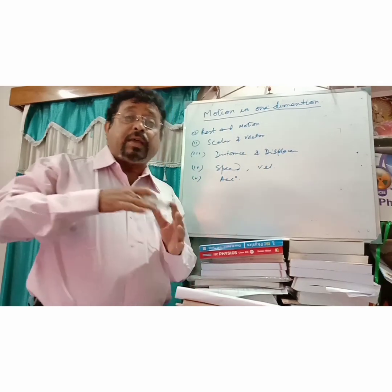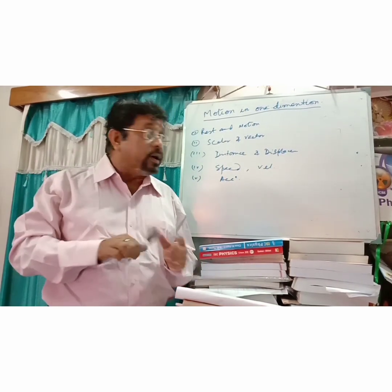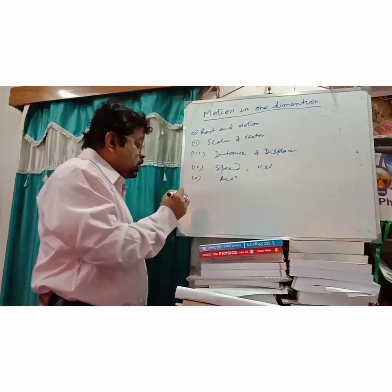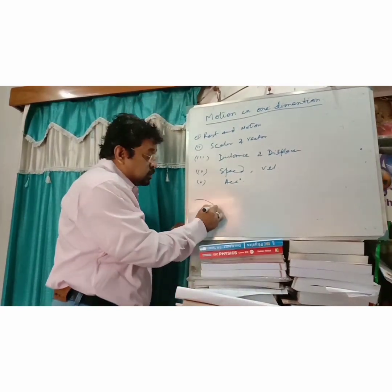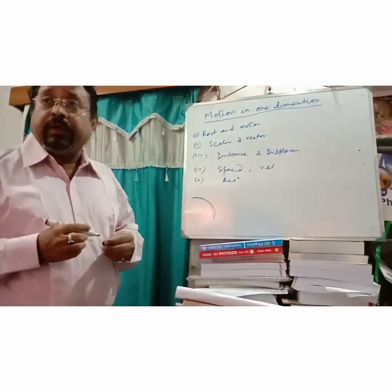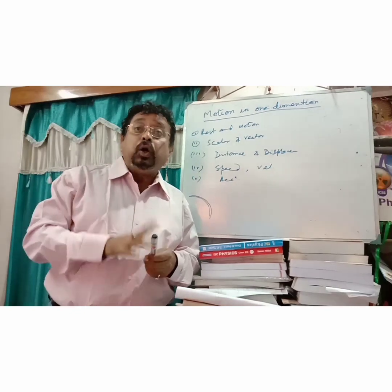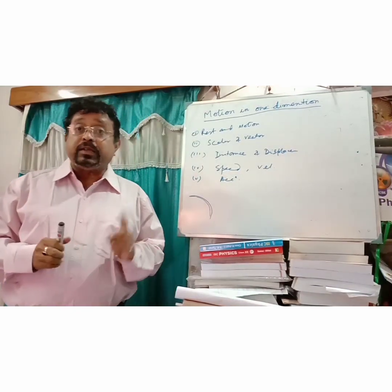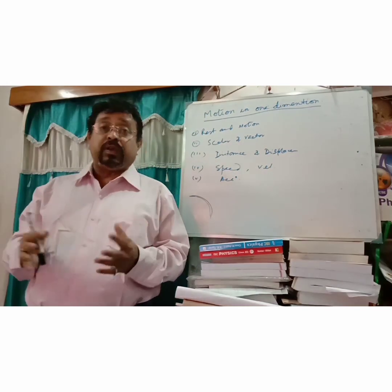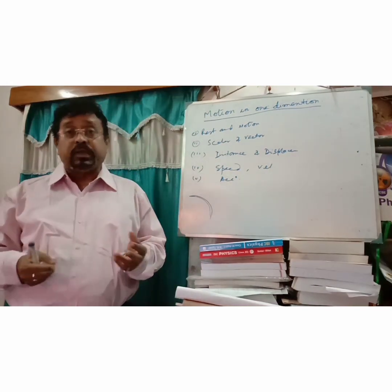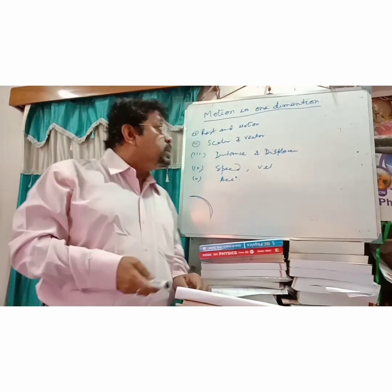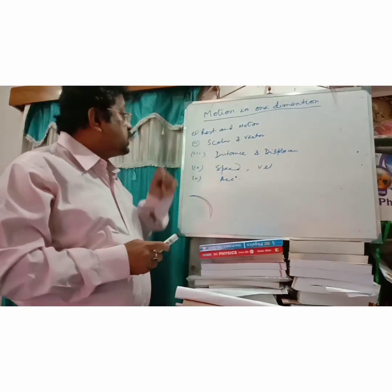There are other types of motion also. Motion in Two Dimensions — for example, if you throw a stone from the roof of a tower, the stone will move in a curve. When it moves in a curve, we call it motion in Two Dimensions. And then there is motion in Three Dimensions, like in space. But here in class 9, we restrict ourselves only to motion in One Dimension.